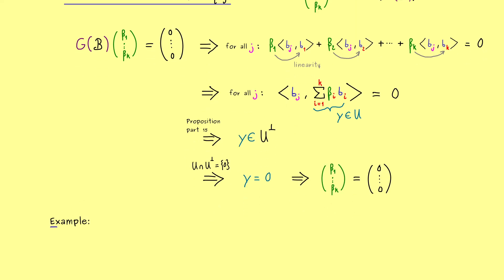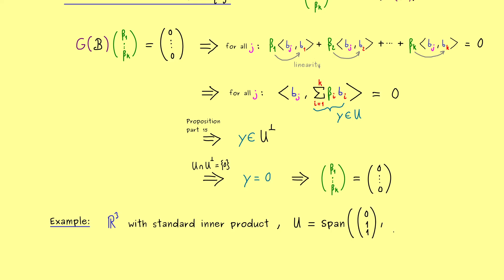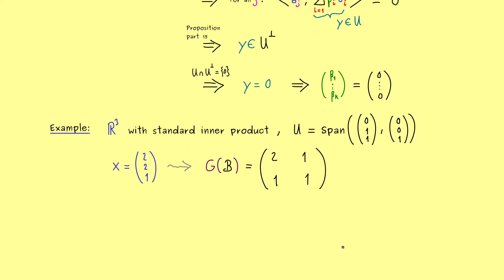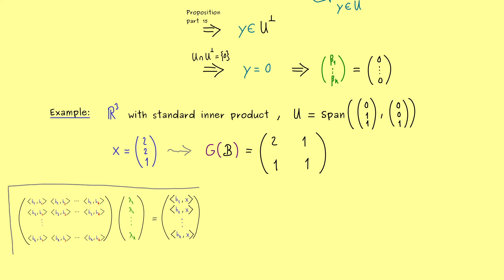Let's take R³ together with the standard inner product, and let U be a two-dimensional subspace — simply spanned by two vectors. It's not hard to see that they span the yz-plane. Calculating the orthogonal projection of a given vector x should not be so complicated, but let's forget that and just use the Gramian matrix. In this case it's a 2×2 matrix where we just have to calculate standard inner products: the entries come out as 2, 1, 1, and 1. Recalling the general formula, the Gramian matrix on the left is already calculated since it was given by four inner products.